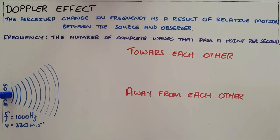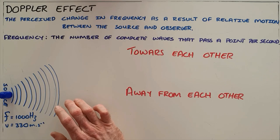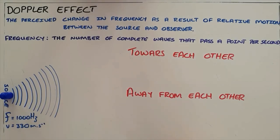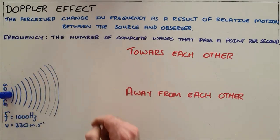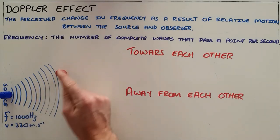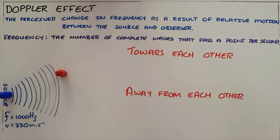The Doppler effect is the perceived change in frequency as a result of relative motion between the source and observer, where frequency is the number of complete waves that pass a point per second. Here we have a source — which can be anything emitting a sound or any kind of wave. In this case, the source emits a frequency of 1000 hertz, meaning 1000 waves pass away from the source per second. A stationary observer within that range will experience exactly 1000 waves per second, detecting the same frequency the source is emitting.